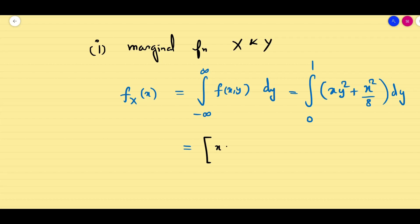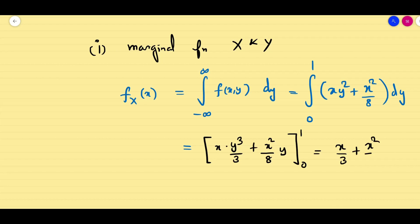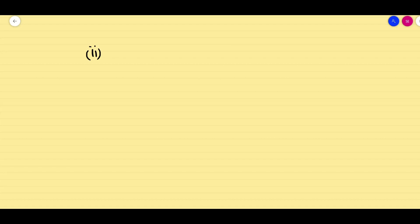Skipping the detailed integration steps, when you evaluate x·y³/3 + x²y/8 from 0 to 1, you obtain x/3 + x²/8. So this is our marginal function fₓ(x).